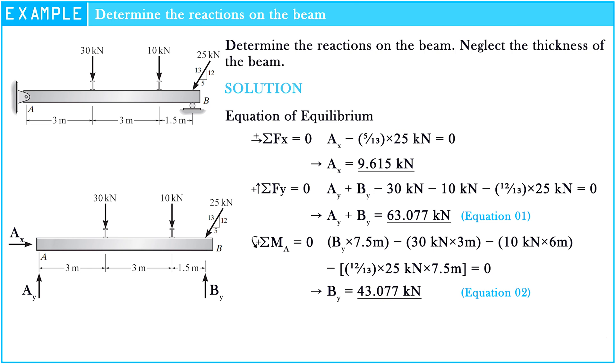After we know BY value, we can substitute equation two into equation one. The last unknown AY is revealed: AY = 20 kN.